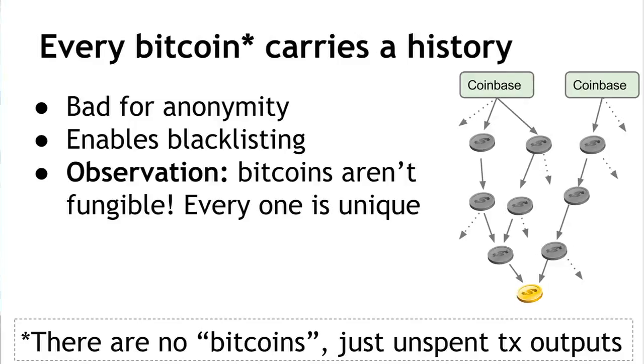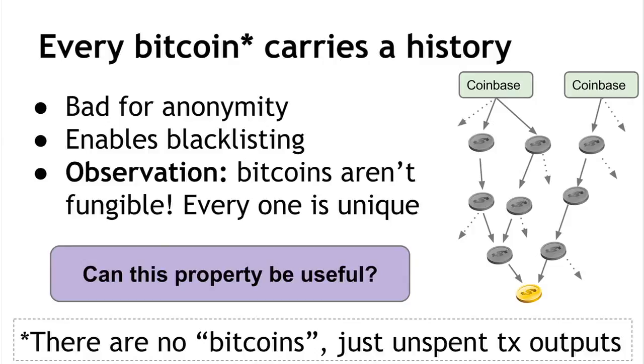There's an interesting observation here: Bitcoins aren't fungible. Fungible is an economic term meaning every Bitcoin has the same value as any other and they can be exchanged with no loss. With Bitcoins, that's not exactly true — every Bitcoin is unique and has a different history. If the history is meaningful to people, my one Bitcoin may not be the same as your one Bitcoin, and maybe neither of us is willing to trade because one of us prefers the history of the coin we currently have.